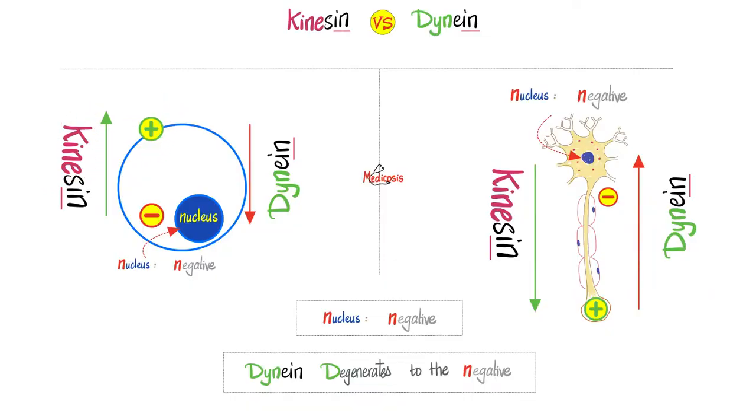Now let's talk more about kinesin and dynein. Kinesin, keep it positive. But dynein is a degenerate. It will make you degenerate towards the negative. Now where was the positive? The positive is in the periphery, the plasma membrane. Where is the negative? The negative is in the nucleus. Kinesin, keep it positive. So from negative to positive. Dynein, degenerate towards the negative. Now let's apply the same concept for your neuron. Where is the nucleus? The nucleus is in the cell body and the nucleus has to be negative. But hey, Medicosis, why is the nucleus always negative? Because recall that your DNA, which is in the nucleus, had phosphate group and phosphate is negative. It makes sense. So the same concept applies. The nucleus is negative. Where is the positive? It's at the periphery. So kinesin, keep it positive. But dynein will degenerate towards the negative.